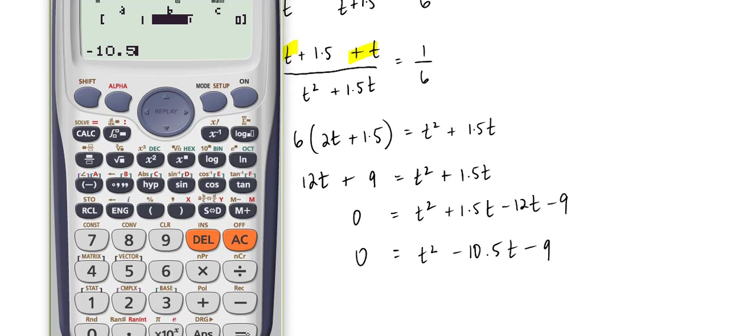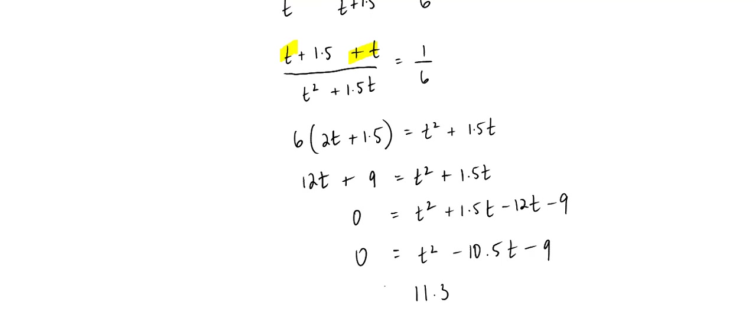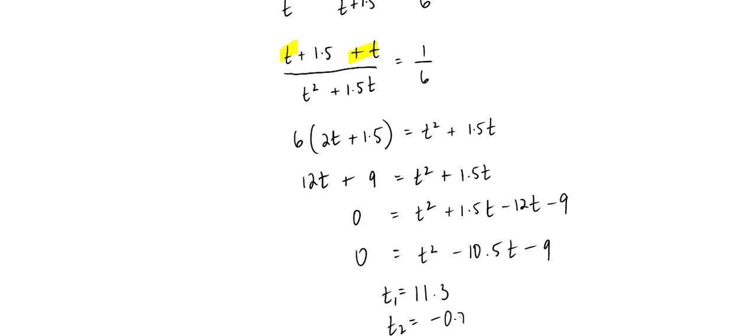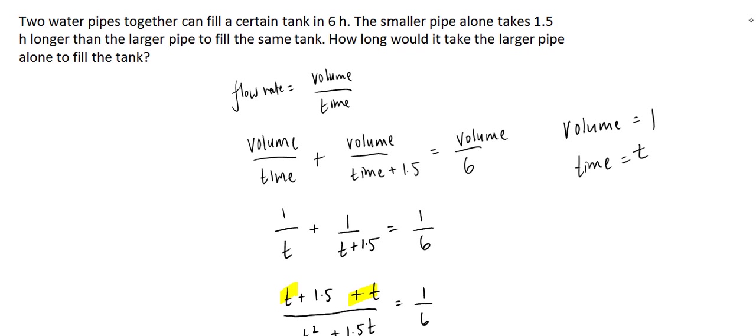Negative 10.5 and negative 9. Now we should be looking for a positive number. That's one of the numbers: 11 and a half, approximately 11 and a half hours. Let's look at the other possibility: negative 0.79. Obviously that can't work.